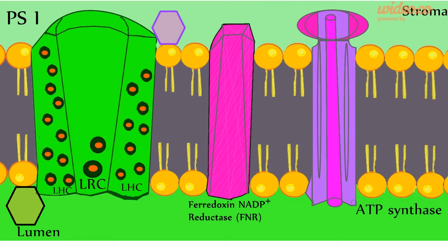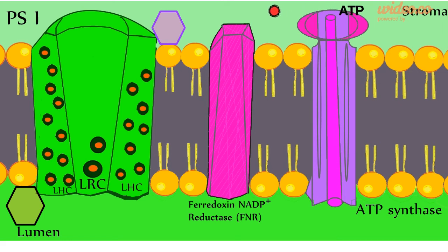Inorganic phosphate and ADP collect on the outside of ATP synthase. The concentration gradient between the lumen and the stroma causes hydrogen ions to pass through ATP synthase. When this happens, it gives ATP synthase the energy required to combine ADP and inorganic phosphate to create adenosine triphosphate, or ATP.